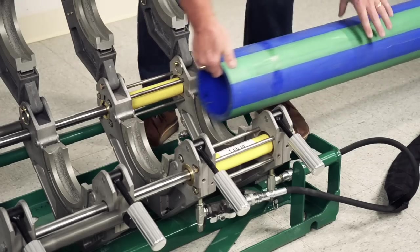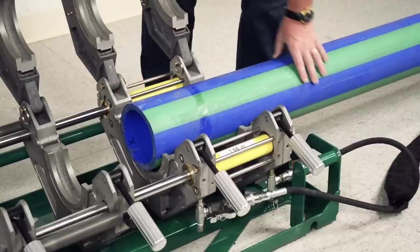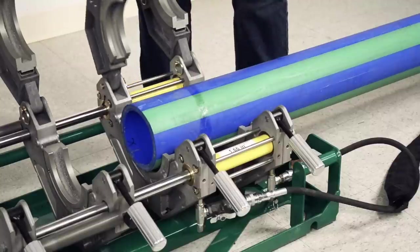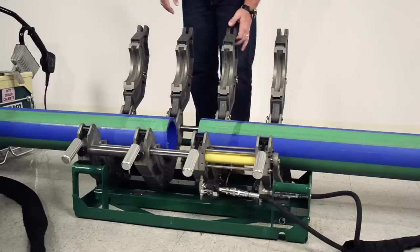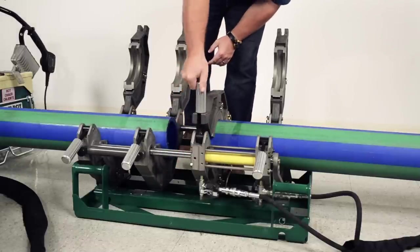Okay, let's load the pipe. With the pipe as level as possible, feed it into the jaws with about a finger's width extending inside the jaws. A finger's width will allow enough material to get a complete face-off. Once the pipe is set into position, close the upper jaws and use the clamp knobs to tighten the jaw around the pipe.